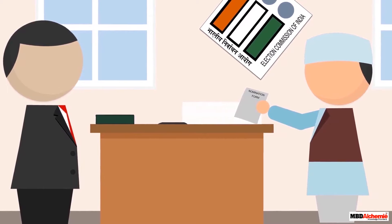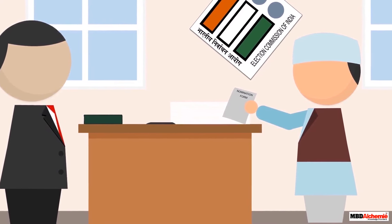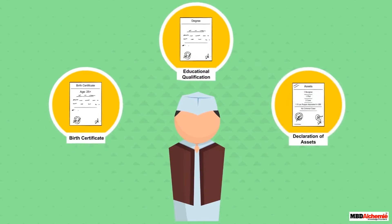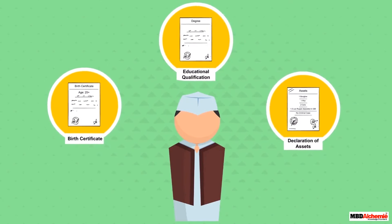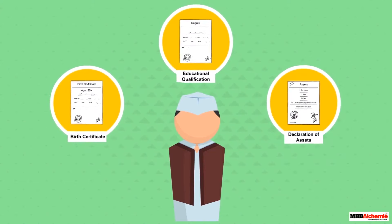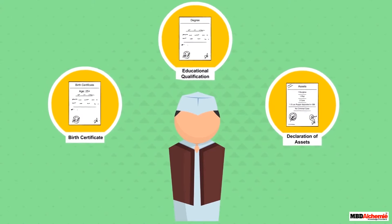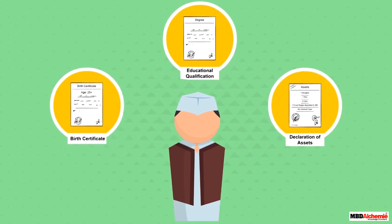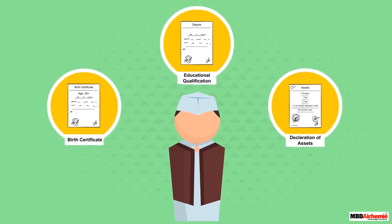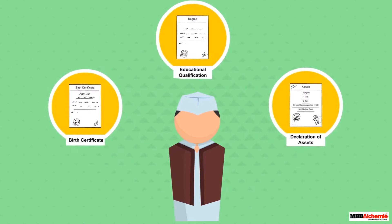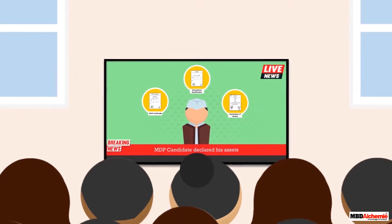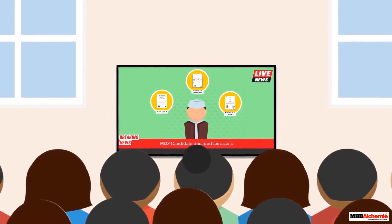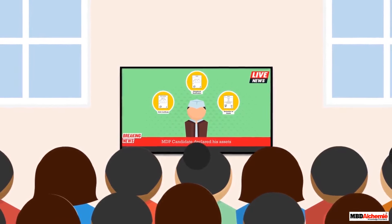Anyone who wishes to contest the elections has to fill the nomination form and pay a security deposit. He or she must be at least 25 years of age. All candidates are required to make a legal declaration regarding their assets and liabilities, educational qualification, and criminal cases if any pending against them. This information is put into the public domain so that voters can make an informed decision about their representatives.